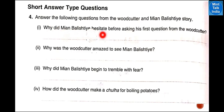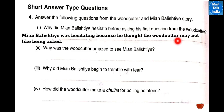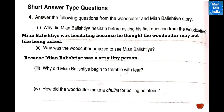Number 1: why did Mian Balishti hesitate before asking his first question from the woodcutter? Mian Balishti was hesitating because he thought the woodcutter may not like being asked. Number 2: why was the woodcutter amazed to see Mian Balishti? Because Mian Balishti was a very tiny person.